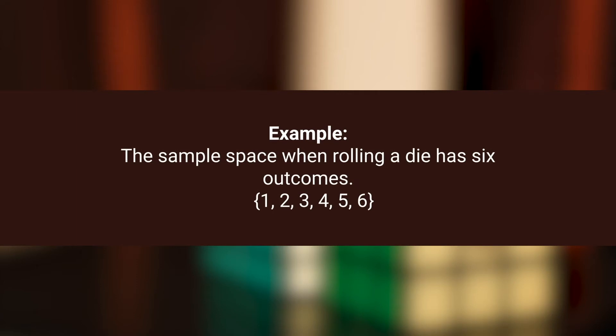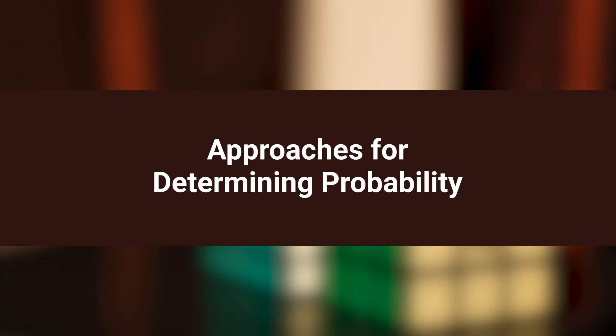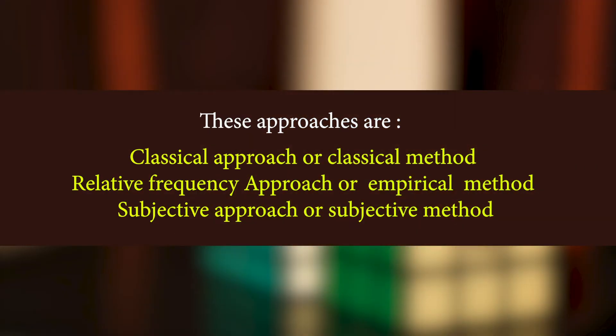The sample space when rolling a die has six outcomes: 1, 2, 3, 4, 5, 6. Now, there are three approaches for determining probability. The first approach is the classical approach, or classical method. The second is the relative frequency approach, or empirical method. The third is the subjective approach, or subjective method. An event consists of one or more outcomes and is a subset of the sample space. For example, a die is rolled and event A is rolling an even number.